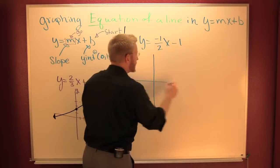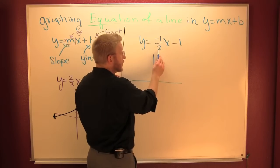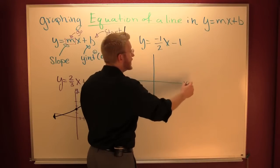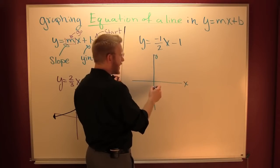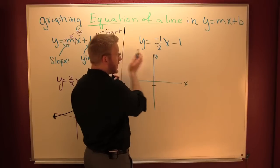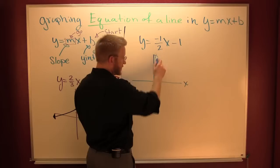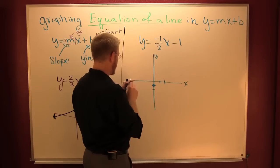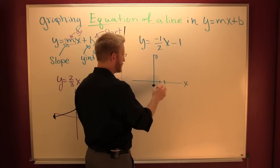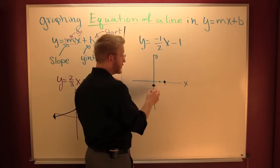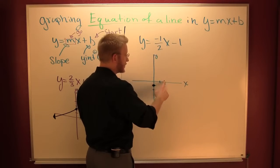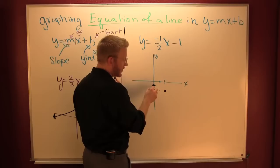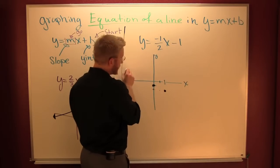Now that we've got it in y equals mx plus b, b tells you where to start and the slope tells you where to go. So where does this thing start? It starts at minus one on the y-axis. Then from there, going from left to right, you go down one, right two. That's where you start, then you go down one, right two. Down one and right two — and then you connect the dots.